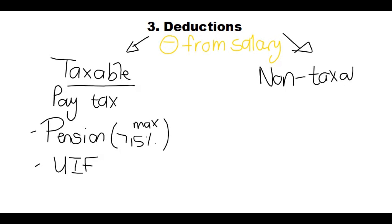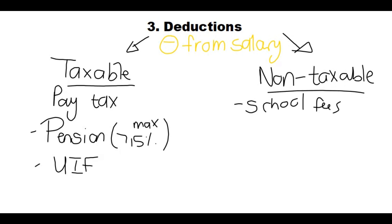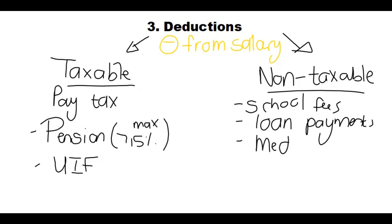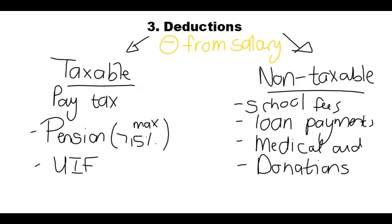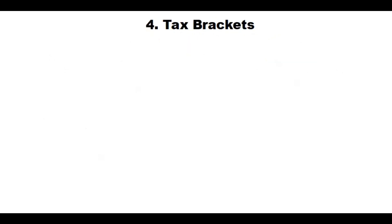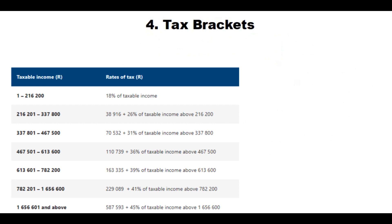On the other side we have non-taxable deductions — as the name says, you don't have to pay tax on these. For example, money deducted from your salary for your child's school fees, loan payments, or any EFT payments. Medical aid is also non-taxable. Donations to registered charities or registered companies also mean you don't pay tax on that amount.